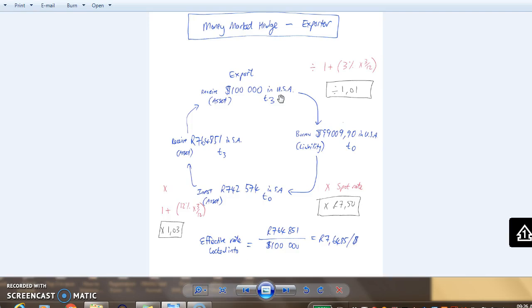To do that, we borrow $99,900 in the US now at time zero. We create a liability that will incur interest for three months at 3%. We proportion it for three months and at the end of the period it will be $100,000. Then we can receive $100,000 from the customer and pay that liability.